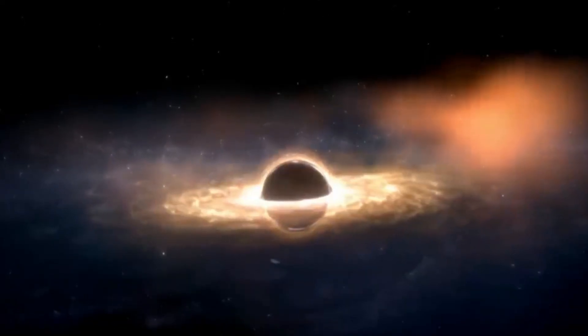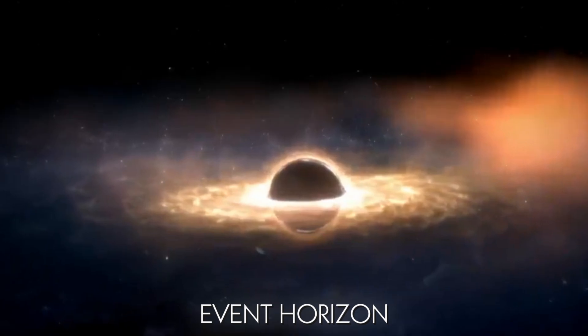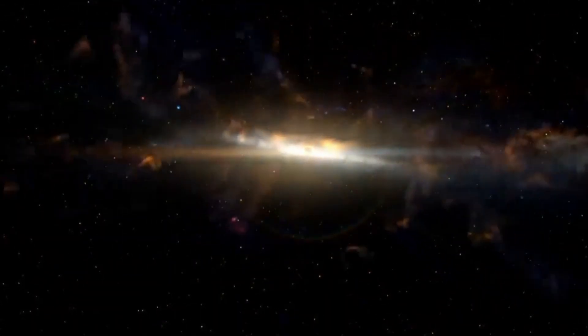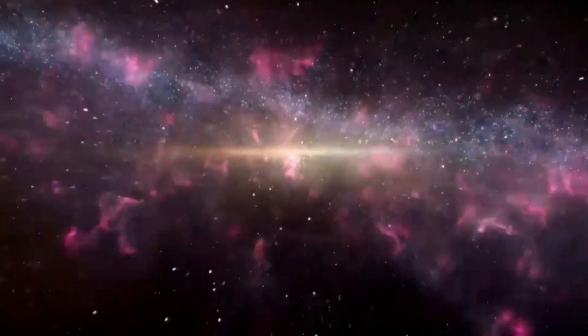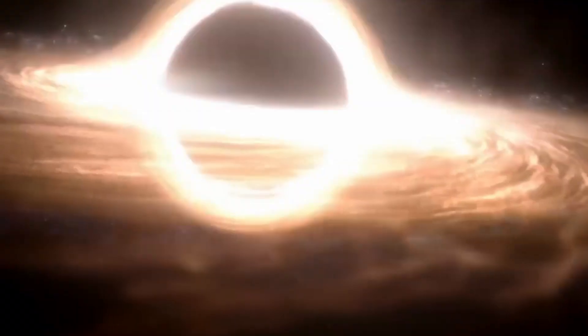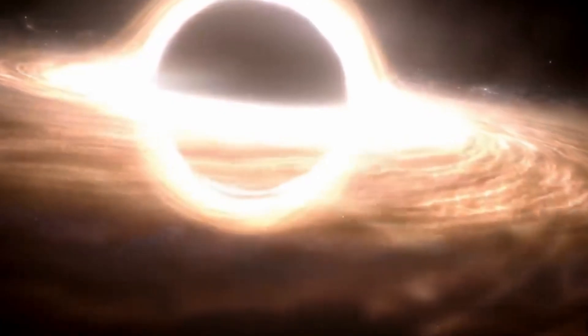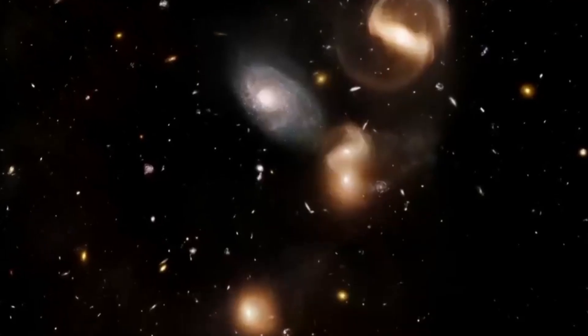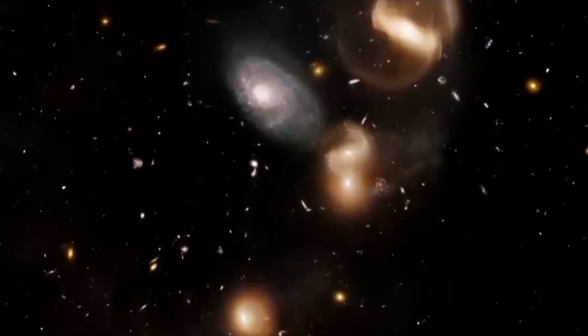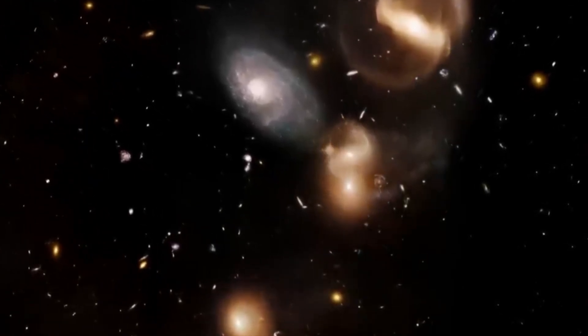Every black hole has a boundary called an event horizon. This boundary marks the point where the black hole's pull is so strong that nothing, not even light, can escape from it. This makes the event horizon a one-way surface that traps light and information inside the black hole. Because of this, black holes themselves don't emit or reflect any light, making them invisible in space.